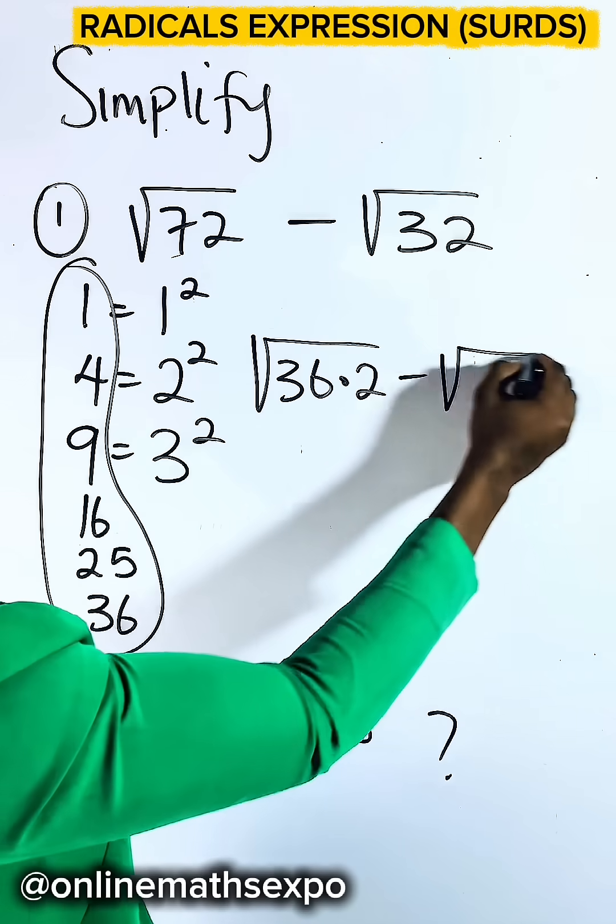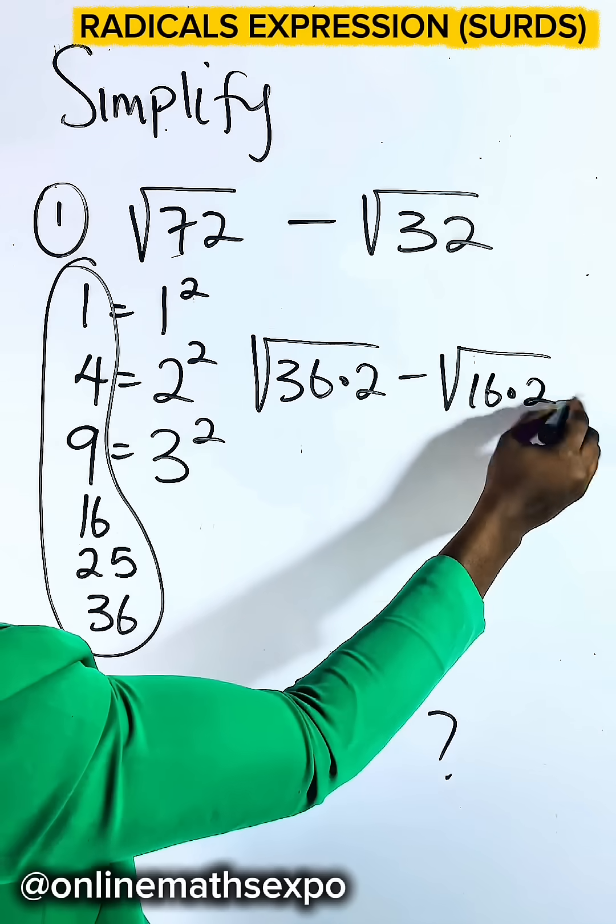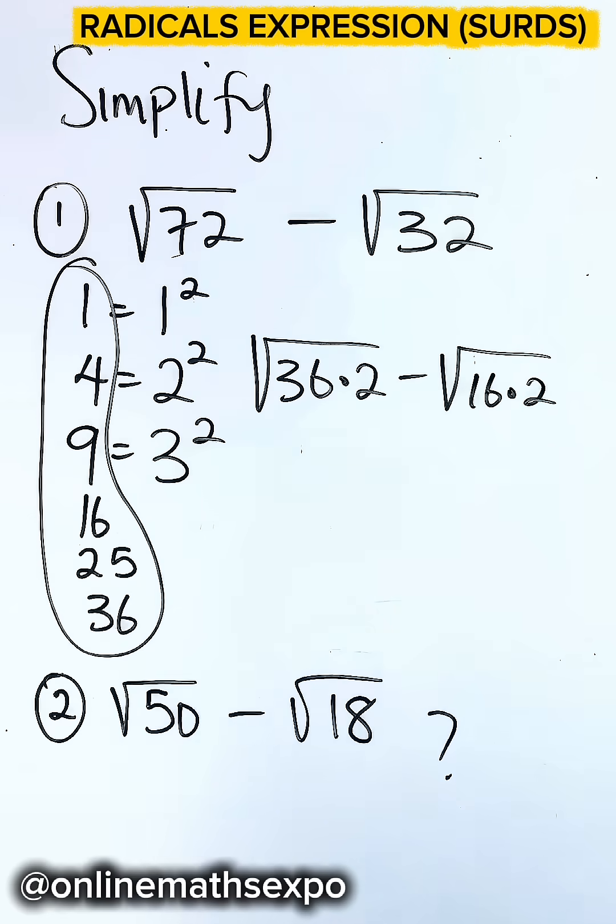And for 32, the highest is 16 because 16 multiplied by 2 gives me 32. You are done.